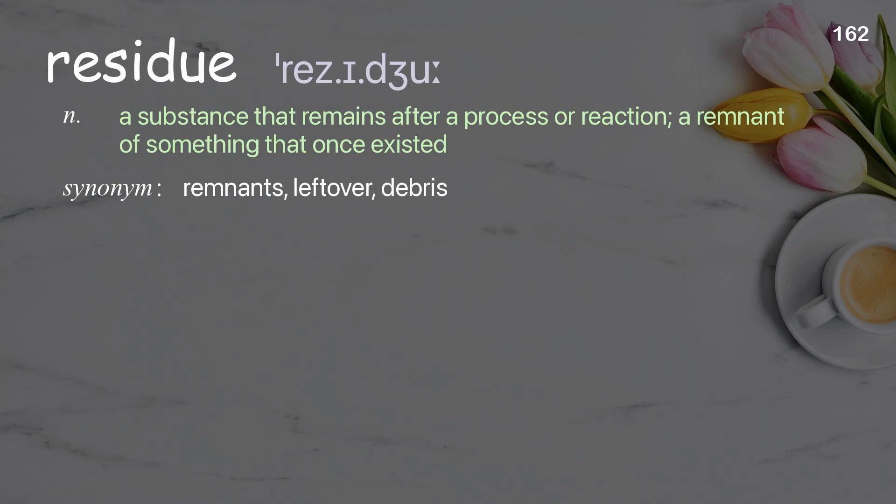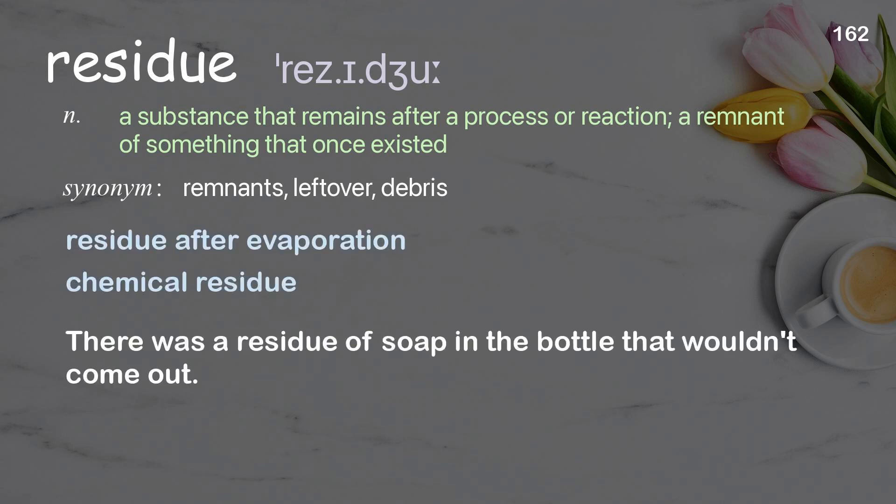Residue: A substance that remains after a process or reaction; a remnant of something that once existed. Examples: Residue after evaporation. Chemical residue. There was a residue of soap in the bottle that wouldn't come out.